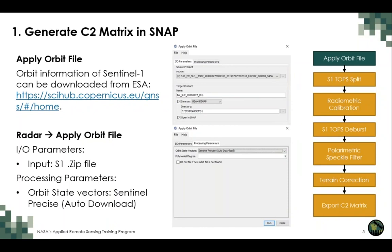To apply the orbit file in SNAP, select the Radar drop-down menu and select Apply Orbit File. In the Input/Output Parameters, select the downloaded SLC image zip file as input and specify an output folder and file name. Under Processing Parameters, select Sentinel Precise Auto-Download as the orbit state vector and run the tool. Sentinel-1 Interferometric Wide Swath Mode provides an image 250 km wide, consisting of three sub-swaths at 5x20 m resolution in the range direction, with nine bursts in the azimuth direction.